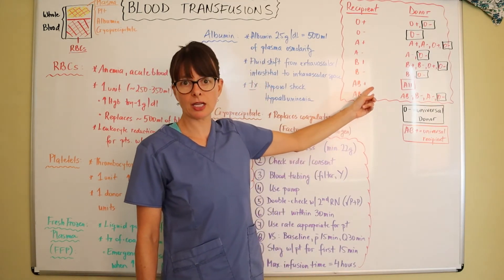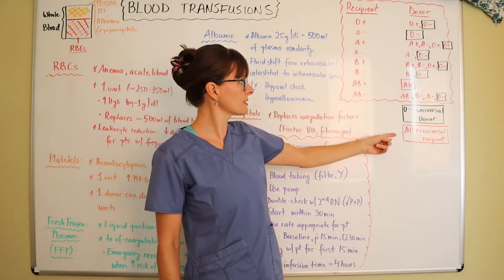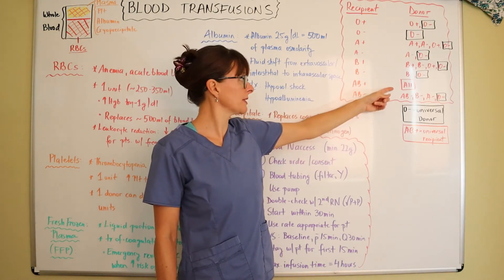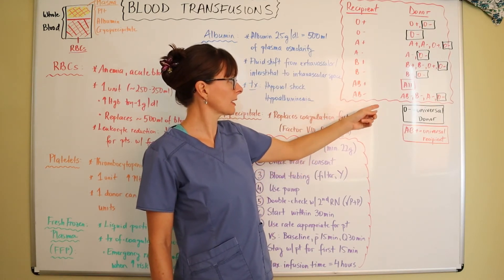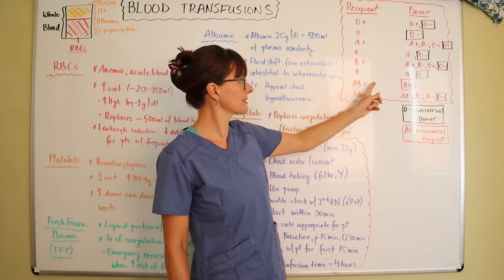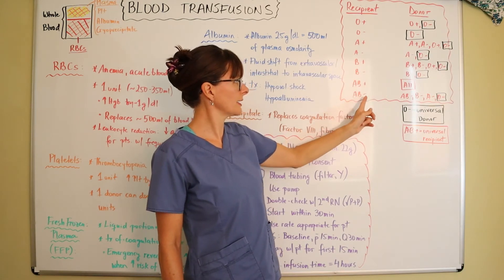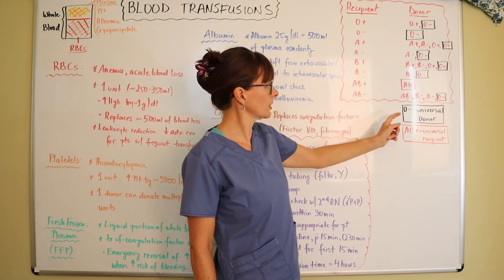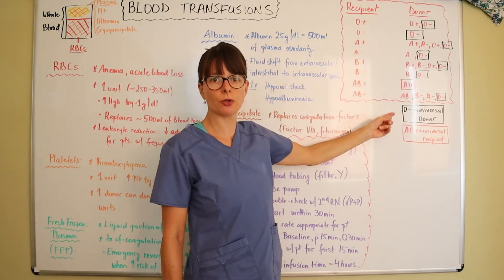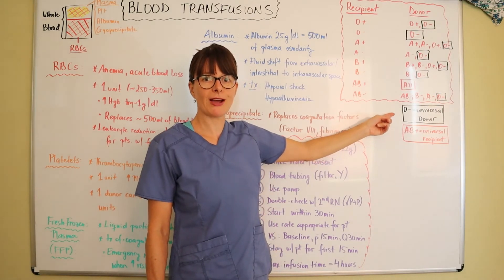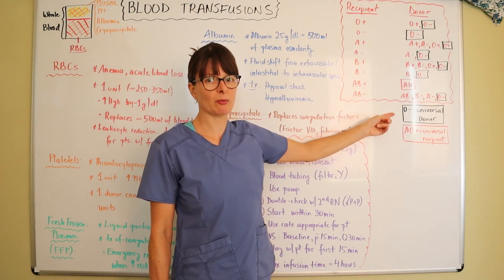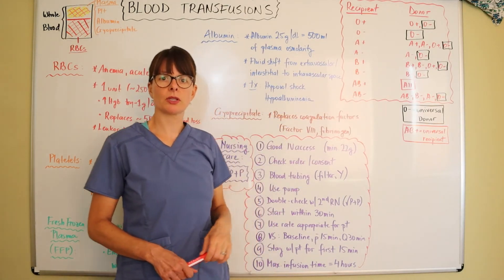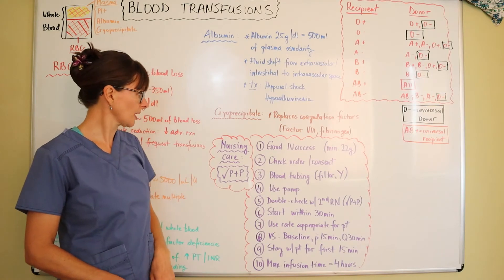AB positive, they are the lucky ones. They are the universal recipient. They can receive all types of blood from any kind of donor and blood type. AB negative can have all of the above except AB positive because it is a negative factor. O negative is the universal donor. That blood is usually a hot commodity. If you have O negative blood type, please consider donating blood because anybody can receive your blood in case of emergency.